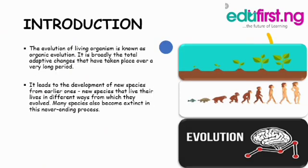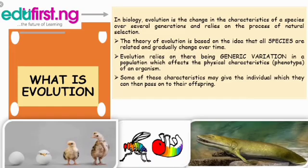In the introduction of this topic, the evolution of living organisms is known as organic evolution. It is broadly the total adaptive changes that have taken place over a long period of time. It leads to the development of new species from earlier ones, and those new species can live their lives in different ways from which they evolved. Many species also become extinct in this never-ending process.